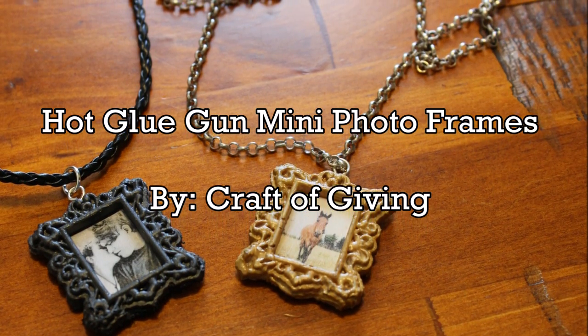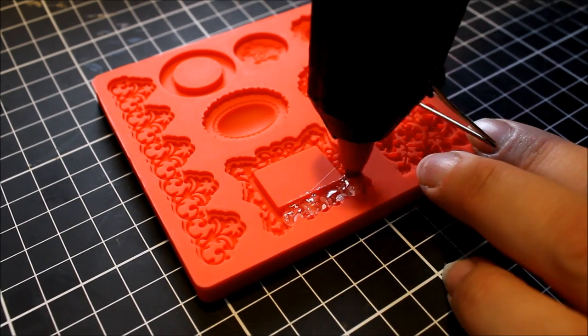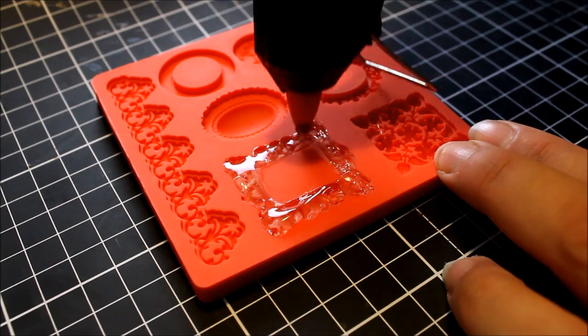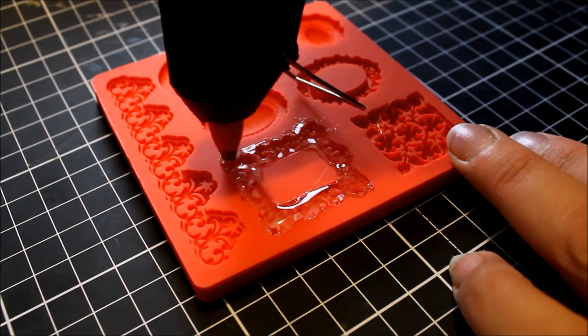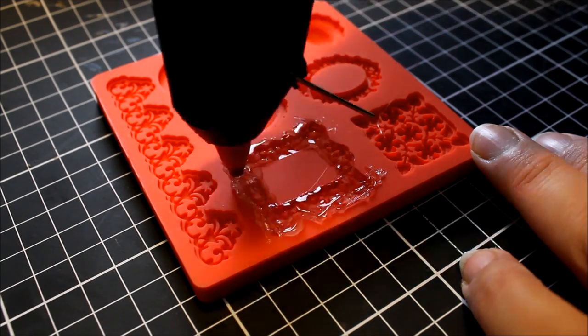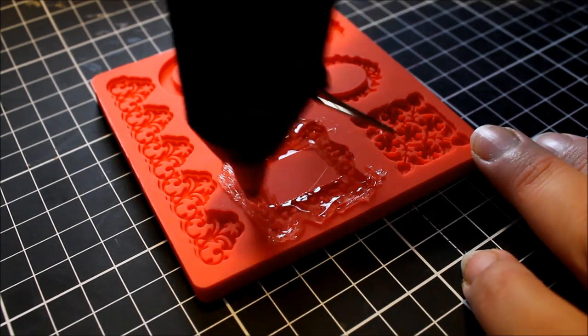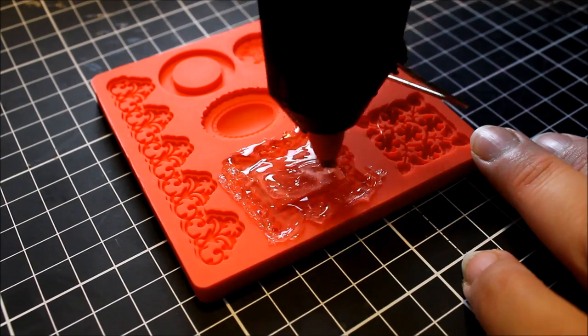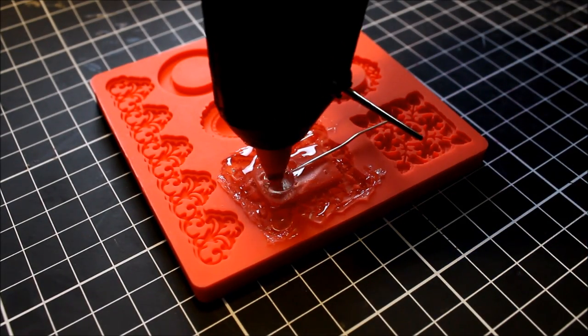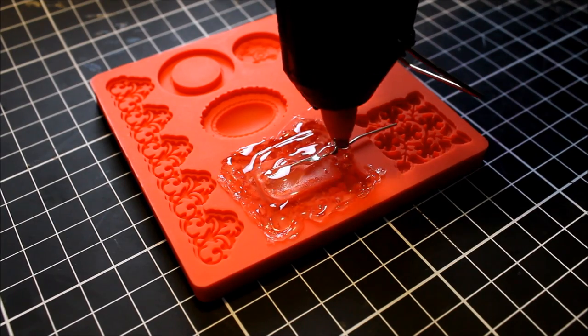You will need to find a silicone mold that has little photo frames like I have here and go ahead and fill the photo frames or the ones you want to use with some hot glue. Don't be afraid to go over the edges as we will be tidying that up a bit later. This just ensures that you capture all the little details. Go ahead and insert an eye pin needle while the glue is still hot and cover it with some more glue to secure it in.